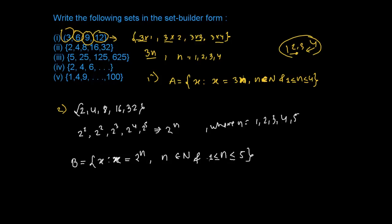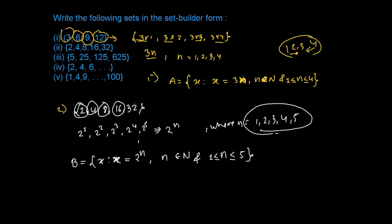With n going from 1 to 5, we substitute: n=1 gives 2, n=2 gives 4, n=3 gives 8, n=4 gives 16, and n=5 gives 32. That's the complete set.